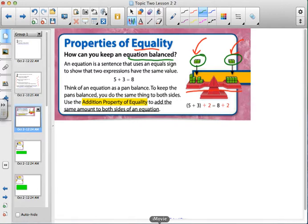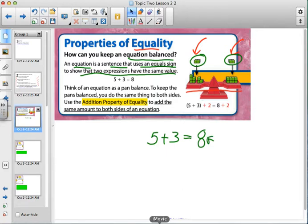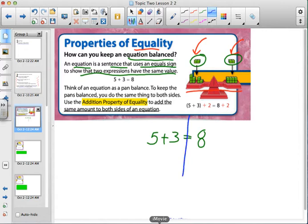Now, here's the thing. How can you keep an equation balanced? Well, what you do on this side, you have to do on that side. That's how you keep things balanced. An equation is a sentence that uses equal sign to show that two expressions have the same value. The example they give you here is five plus three. And it balances out with eight, doesn't it? Now, is there another way that you could have written eight? Yeah, there's a lot of different ways.